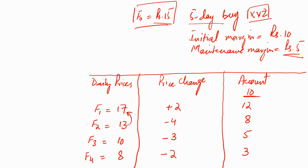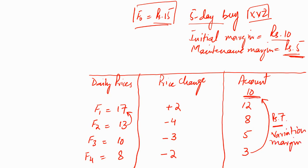Remember, we don't refill back to the maintenance margin of 5 — we refill back to the initial margin of 10. This is a point where many students make a mistake. To bring the account from 3 back to 10 we need an additional 7 rupees. This amount which needs to be added is known as the variation margin. The variation margin is always the difference between the initial margin and the amount which has fallen below the maintenance margin — 7 rupees in this case. Our account is now back to 10.